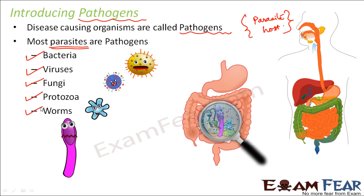Some worms can also be pathogens, but since we are discussing microorganisms, we will mostly discuss these four: bacteria, viruses, fungi, and protozoa.